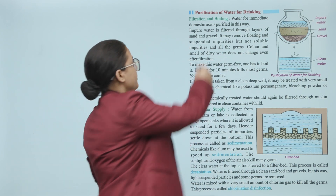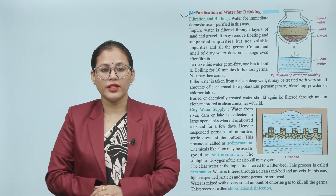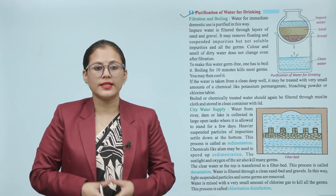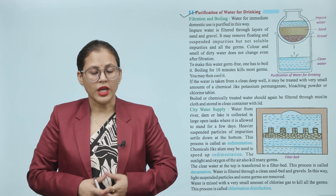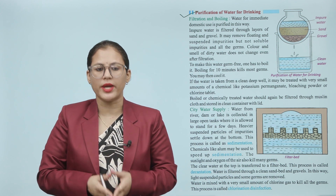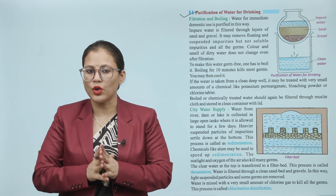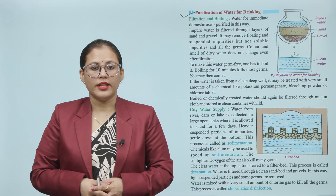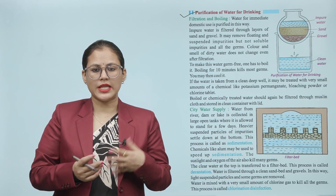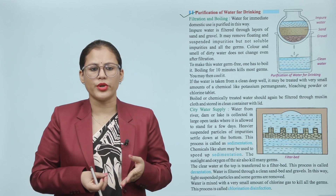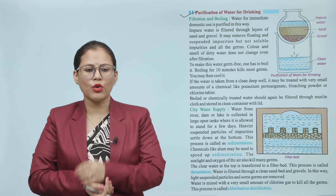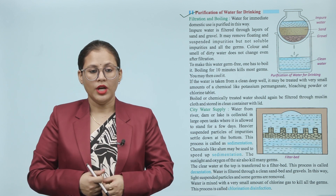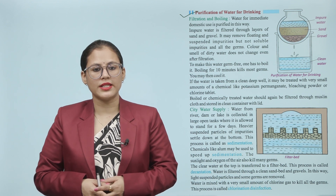Purification of water for drinking. Let's see how we purify water. Number one process is filtration and boiling. Water for immediate domestic use is purified this way. Impure water is filtered through layers of sand and gravel. It may remove floating and suspended impurities but not soluble impurities and all germs. Color and smell of dirty water does not change even after filtration. To make this water germ-free, one has to boil it. Boiling for 10 minutes kills most germs.